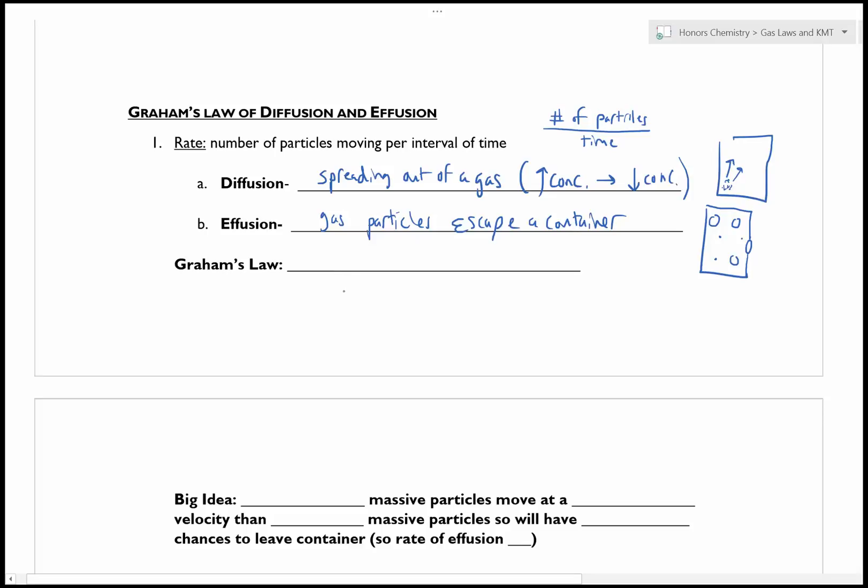So Graham's Law is a way that relates the rate, number of particles moving for an interval of time, that a gas will be able to effuse or diffuse. So his law looked like this. It was comparing two different gases. So the rate A to the rate of B is going to be equal to the square root of the molar mass of B divided by the molar mass of A.